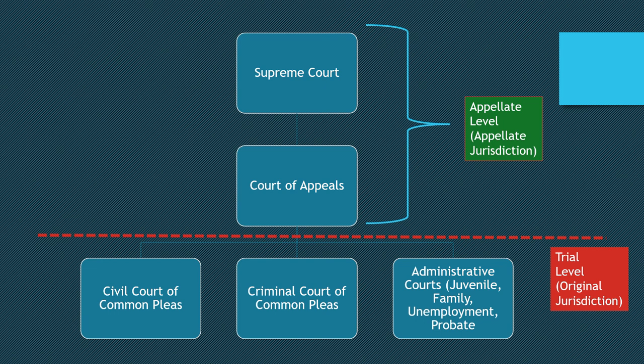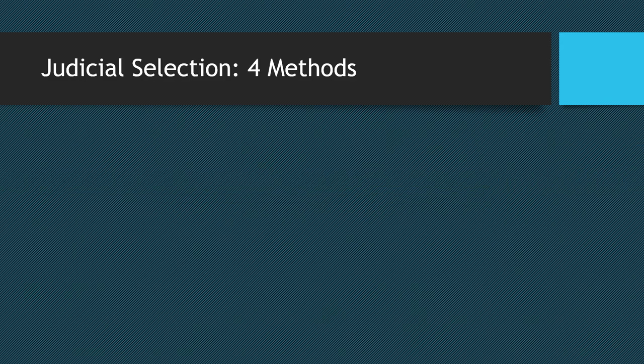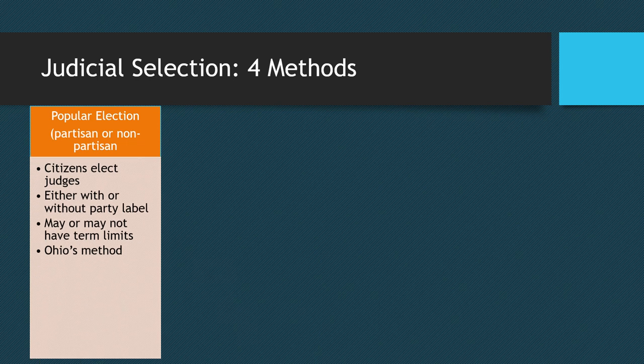There are some small states that don't have an intermediate court of appeals and only have a supreme court at the appellate level. States differ dramatically in how their judges are selected. There are four different selection methods, each with its own political pros and cons. The first is popular election — what we have in Ohio — where citizens actually vote for judges the same way you vote for a legislator. Some states have partisan elections, while Ohio has nonpartisan elections with no party label on the ballot.